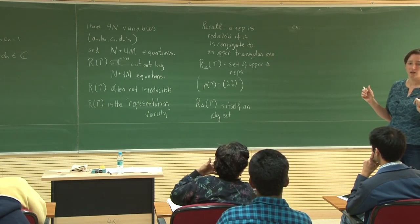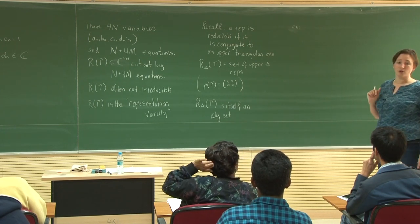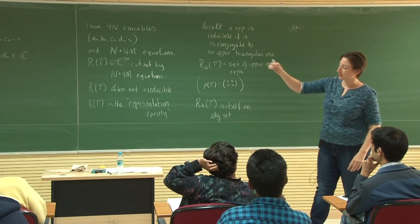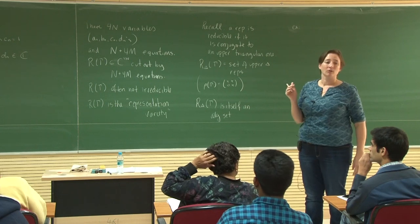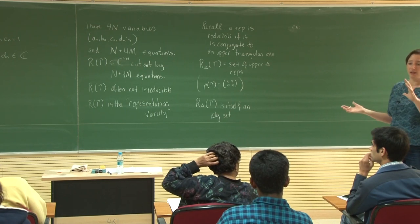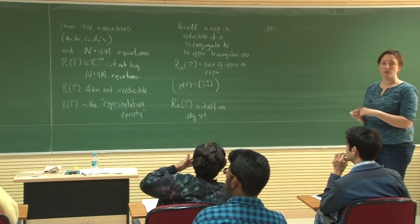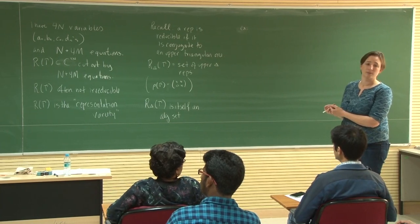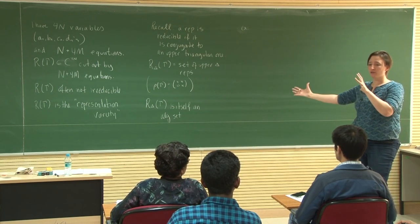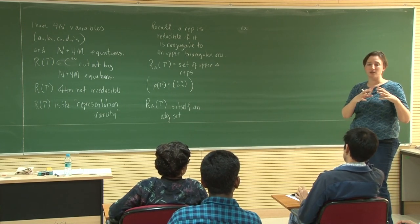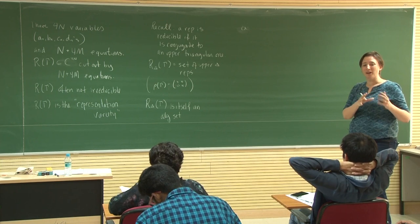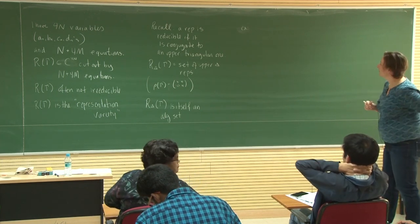For some groups like Z, everything is reducible. But the key point is if I use gamma to be the fundamental group of a hyperbolic knot complement, then I'll always get irreducible representations, because we know that the discrete faithful representation has to be irreducible. So the things we're interested in have irreducible parts, and then just this almost silly part that's just the reducible representations.